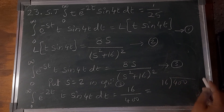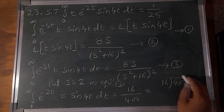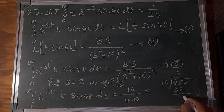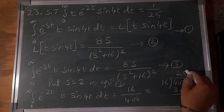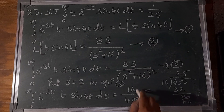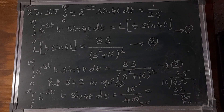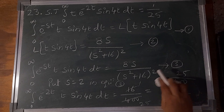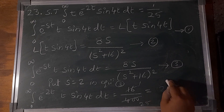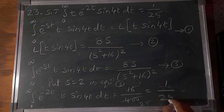16 divided by 20² = 16/400 = 1/25. Hence proved.